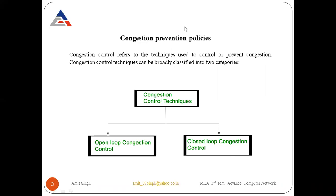Congestion control refers to techniques used to control and prevent congestion. These techniques can be broadly classified into two categories: open loop congestion control and closed loop congestion control. With the help of these techniques, we can easily prevent congestion and manage the number of packets traveling on a network.